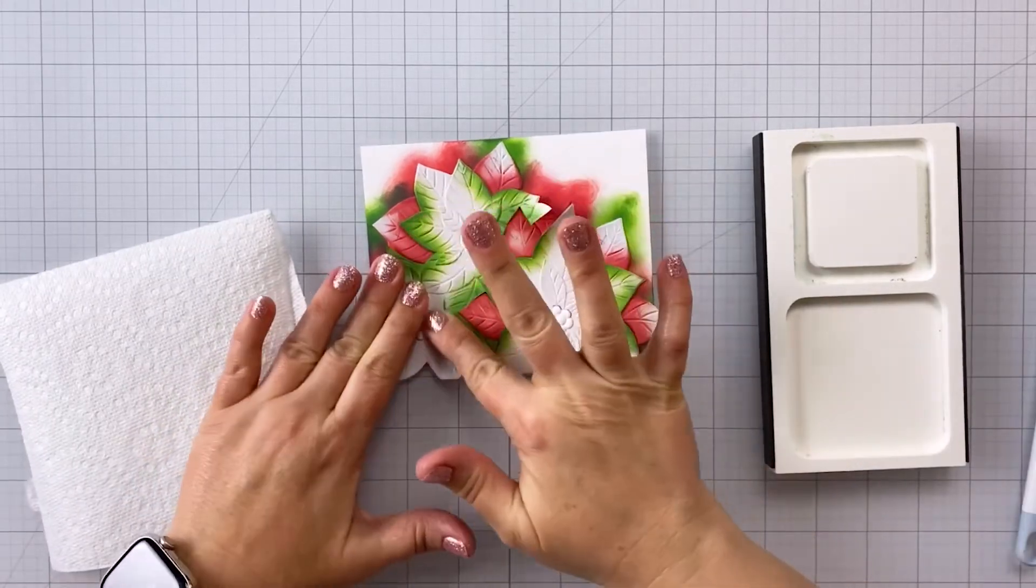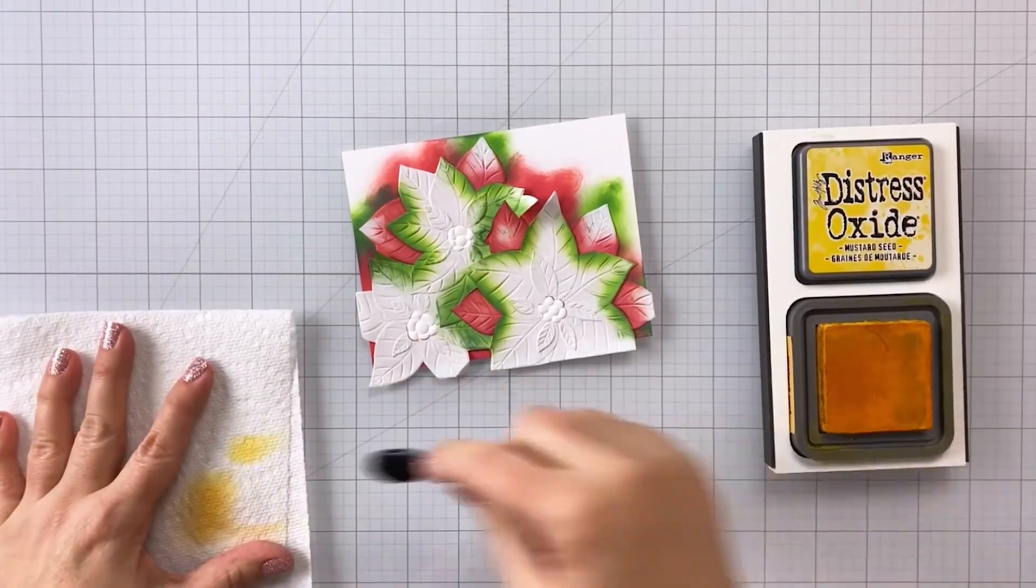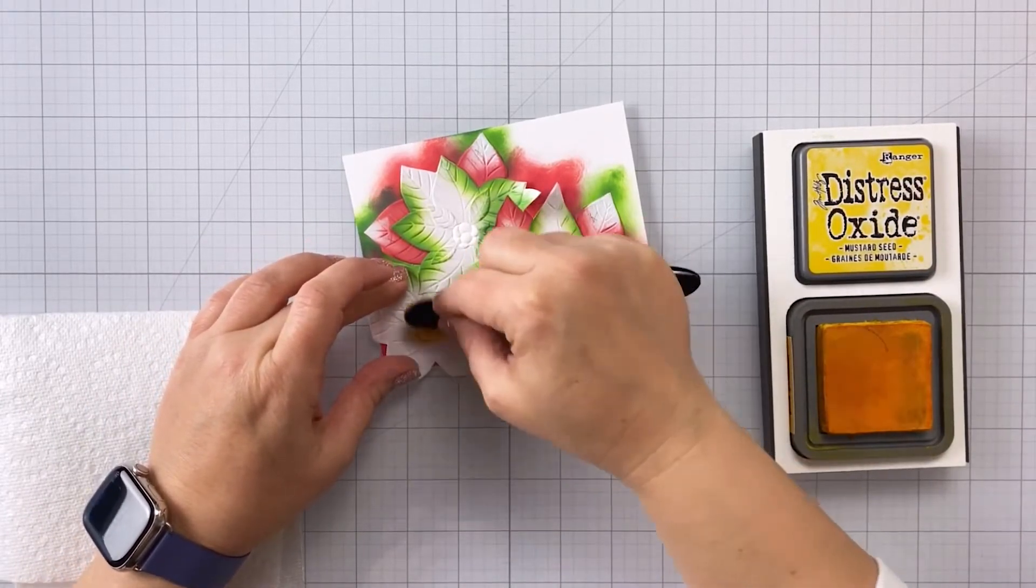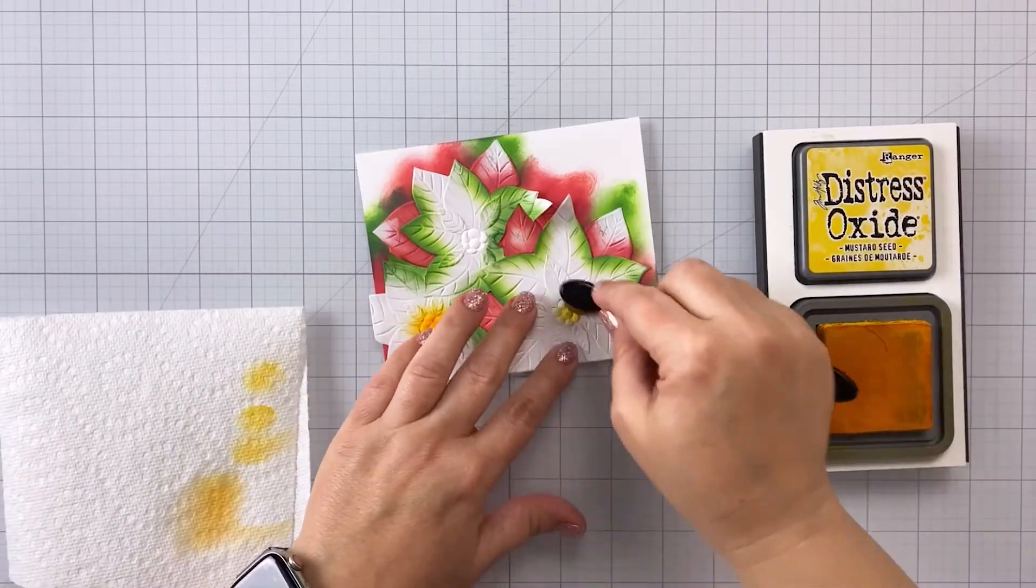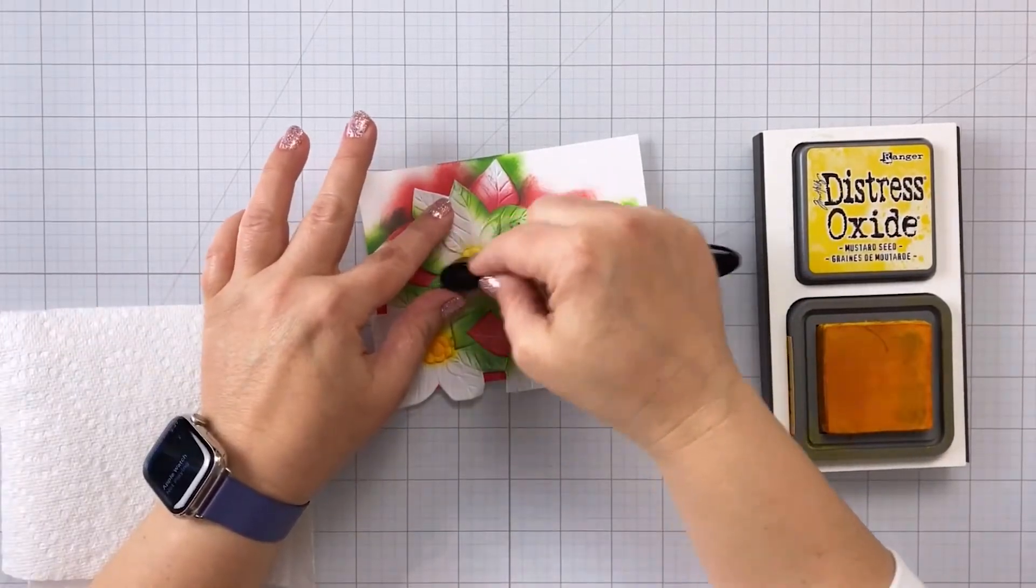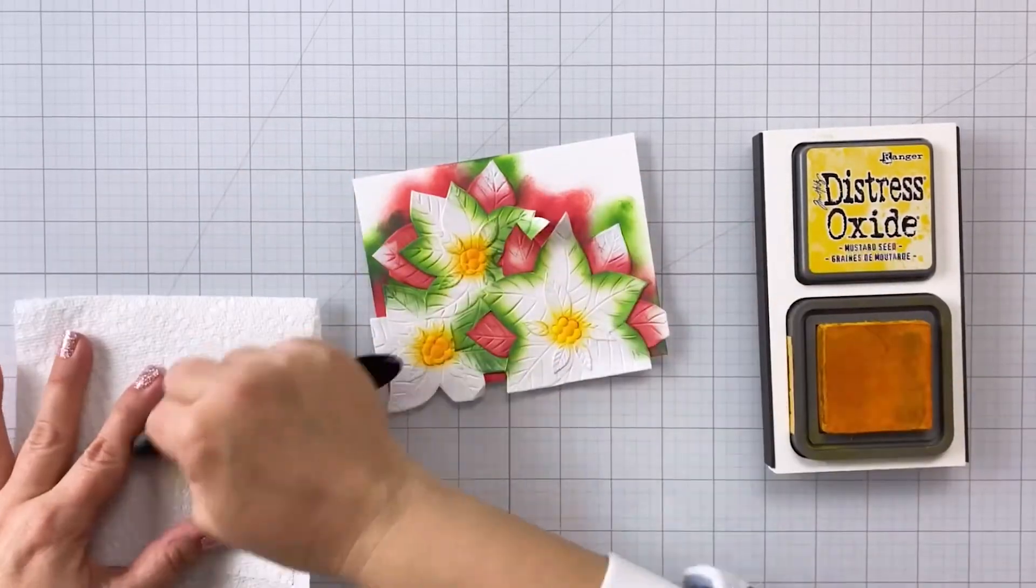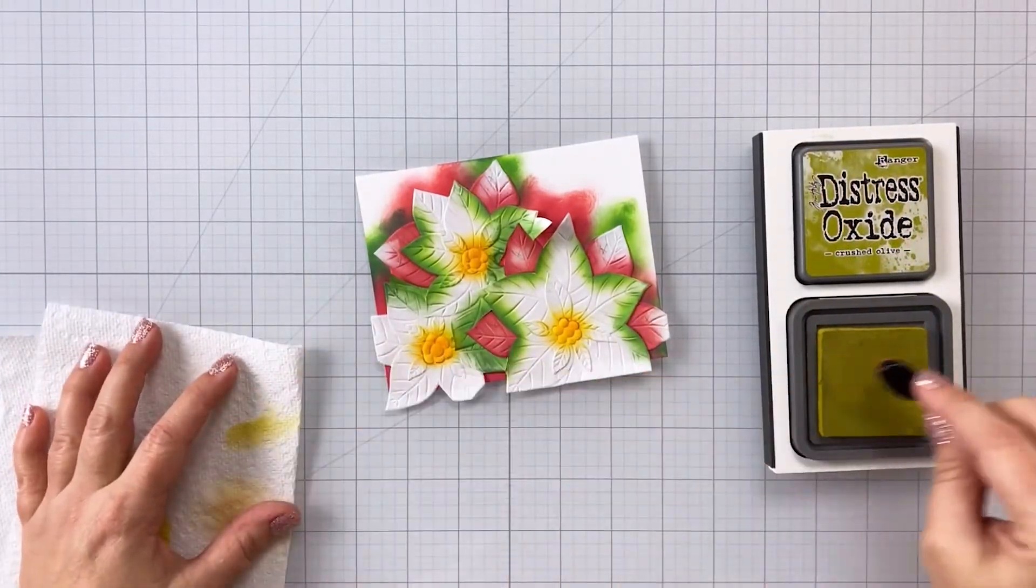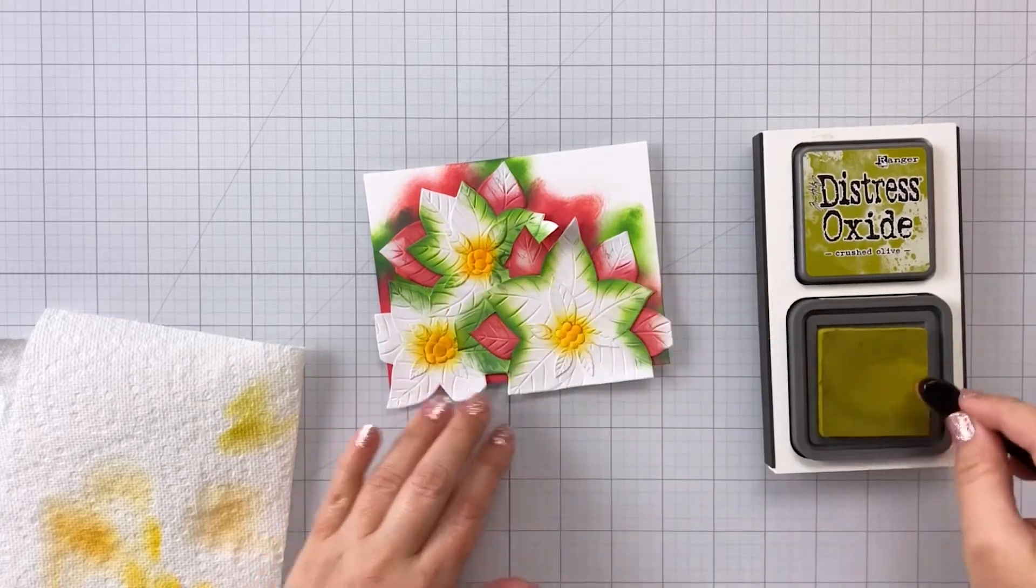So for the centers, I'm going to be using some mustard seed in distress oxide. And once I get the mustard seed on there, I'm actually going to go in with crushed olive. And that's because I want to add a little bit of a green tone on top of the mustard seed. So I'm not going to use very much of the crushed olive, just enough to kind of give it more of a green tone from that yellow tone of the mustard seed. This also could be done with squeezed lemonade or any other yellow or green, light greens that you have. You could even probably get away with twisted citron here, but I really wanted more of a muted yellow green because I thought it would go well in contrast to the red and the bright green of the other leaves.